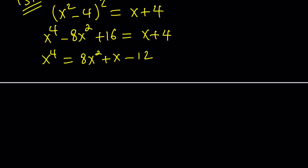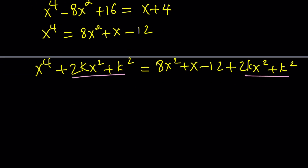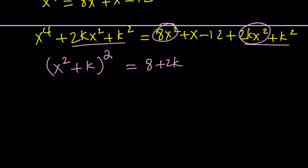There are a couple of different ways to do it. You can add something like 2k x squared plus k squared to both sides, which will make the left side a perfect square. If you add the same thing on the right-hand side, you get plus 2k x squared plus k squared, giving a coefficient of (8 plus 2k) for x squared, plus x, plus (k squared minus 12) as the constant term.